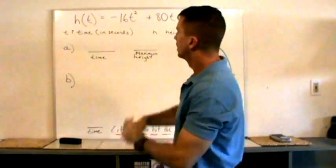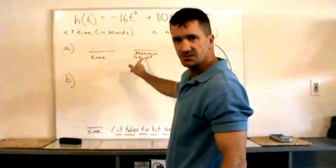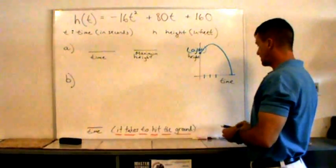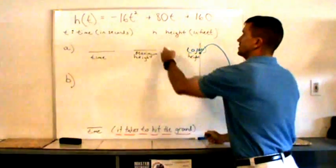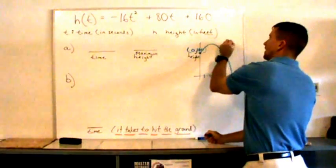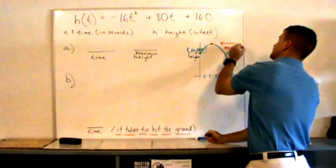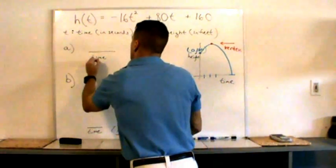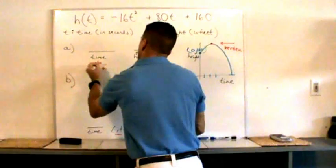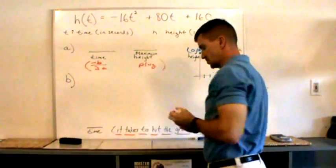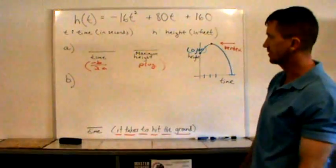We want to determine how long does it take for the ball to reach maximum height. Well, we look at the picture, and that's going to be at the vertex. That's the maximum height, that's called the vertex. The vertex has the form negative b over 2a for the x variable, and then we've got to plug that in, find the corresponding one.